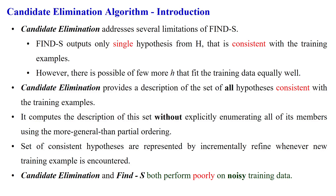The Find-S algorithm has one limitation: it provides only a single hypothesis which is consistent and derived from the hypothesis space with respect to given training examples. But there is the possibility of a few more hypotheses that may fit with the training data equally well.